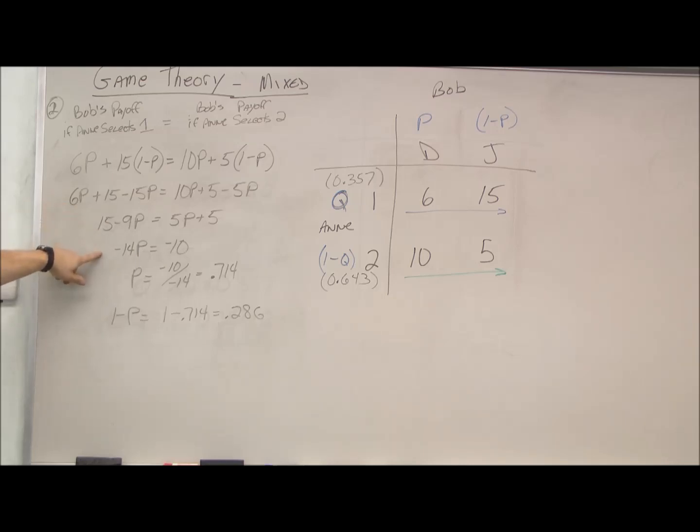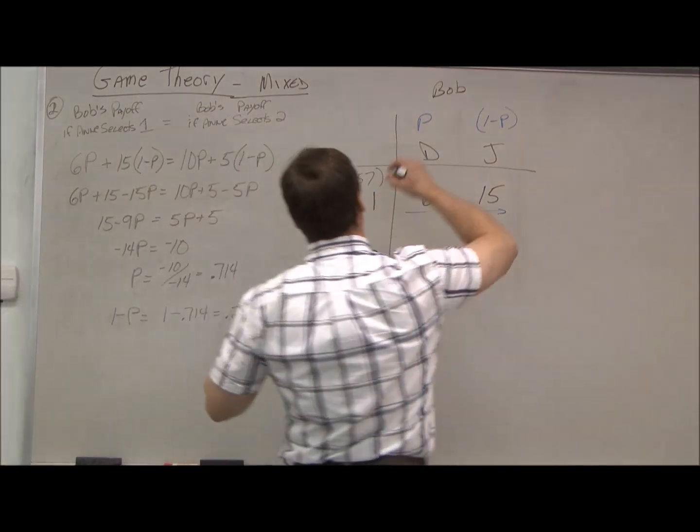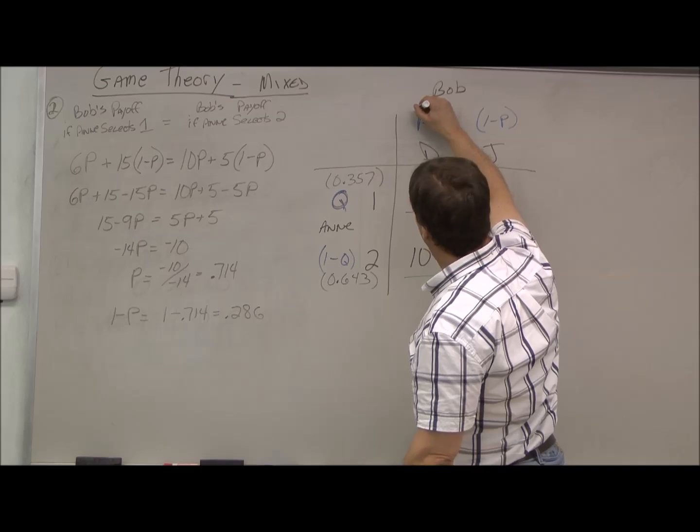This time we just solve for p. We factor through the 15 and the 5, we add like terms, we bring the p over here, the 15 over there. We get negative 10 divided by negative 14, which is a positive 0.714 or 71%. And our one minus p is just the opposite, so one minus that is 0.286.